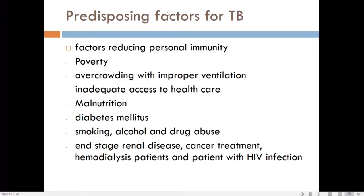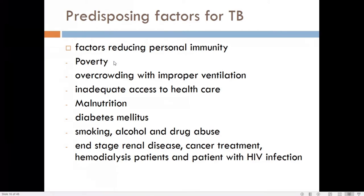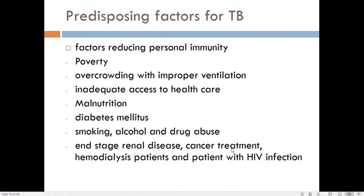Factors predisposing to tuberculosis include poverty, malnutrition, overcrowding with improper ventilation, and inadequate access to healthcare. Medical conditions reducing immunity include diabetes mellitus, smoking, alcohol, drug abuse, end-stage renal disease, patients on cancer treatment, hemodialysis, and HIV co-infection. When working up a patient for tuberculosis, we must simultaneously test for HIV infection.